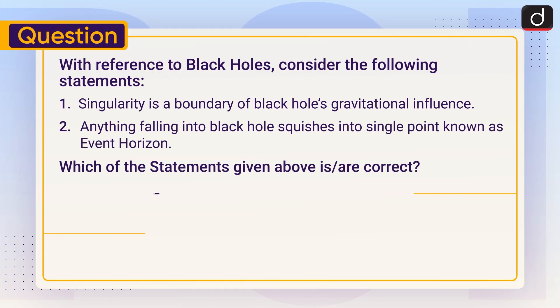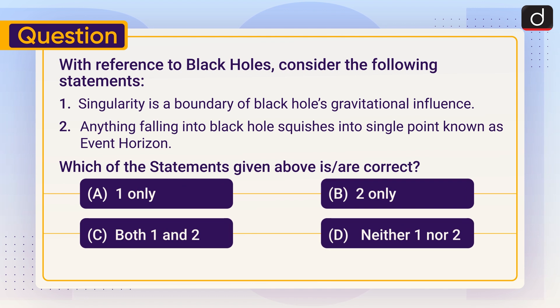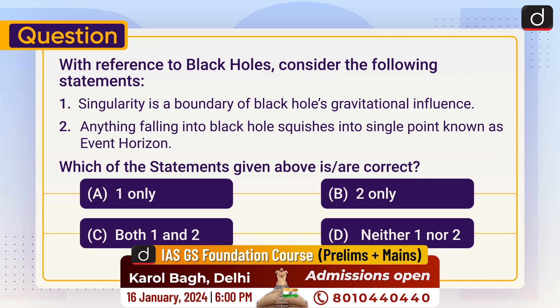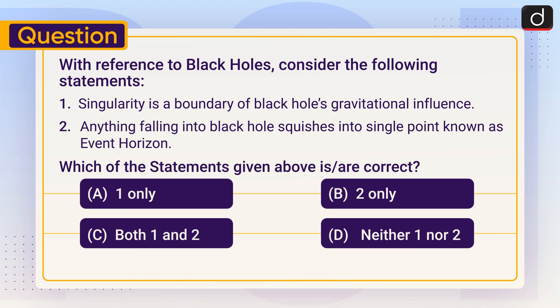Now it's time for the practice question. With reference to black holes, consider the following statements: One — singularity is the boundary of a black hole's gravitational influence. Two — anything falling into a black hole squishes into a single point known as the event horizon. Which of the statements is or are correct? Send your answer in the comment section. Stay tuned for the next episode — thanks for watching, have a great day!